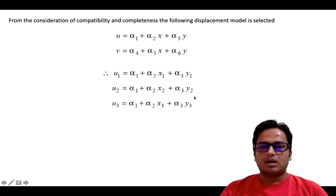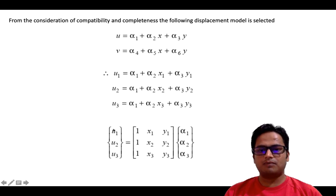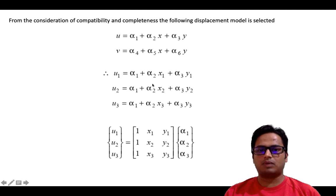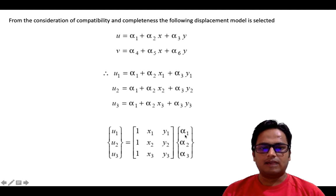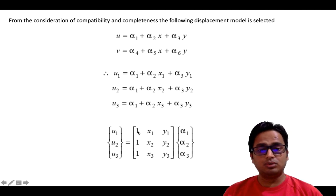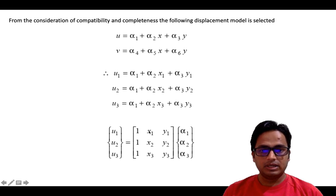Now we will write this in matrix form. The matrix form gives U1, U2, U3 on the left. The coefficient matrix contains rows [1, x1, y1], [1, x2, y2], [1, x3, y3], and the unknown column vector is alpha1, alpha2, alpha3. Performing the multiplication: U1 equals 1·alpha1 plus x1·alpha2 plus y1·alpha3, giving the first equation.